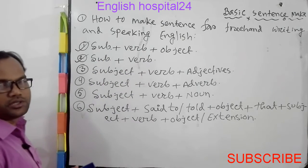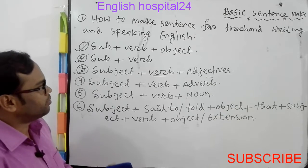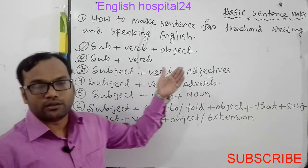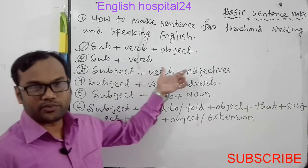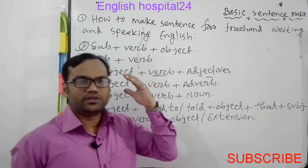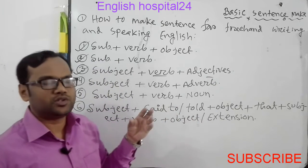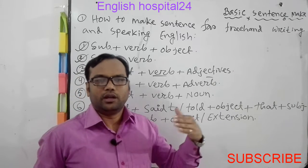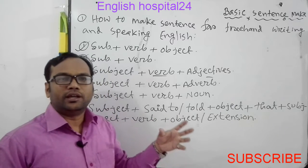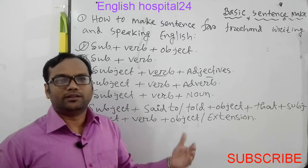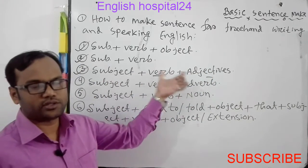Number two structure is Subject-Verb only — we can say or write a sentence using only subject and verb. Examples: he eats, he goes, he writes. Number three structure is Subject-Verb-Adjective. Based on this structure you can make thousands of sentences. Examples: he is good, he is well, he is healthy, he is rich, they are good at English.